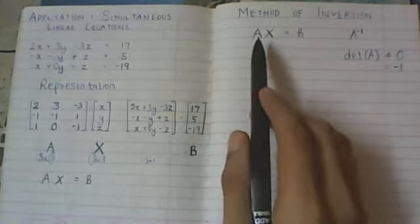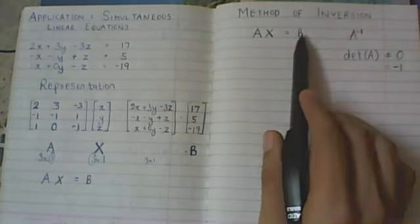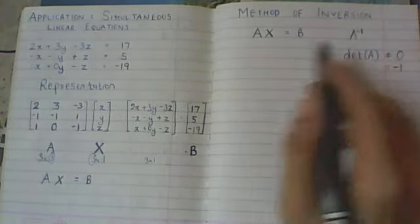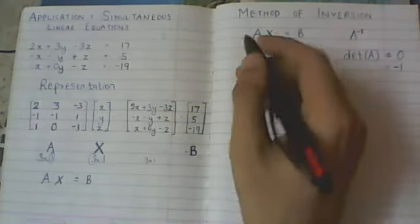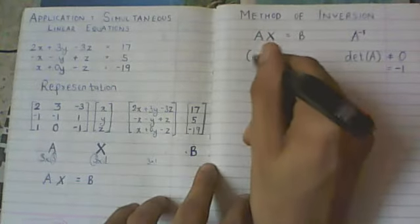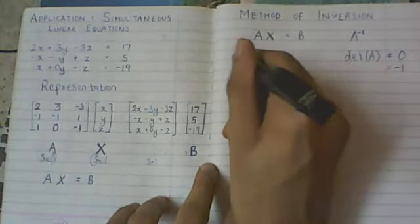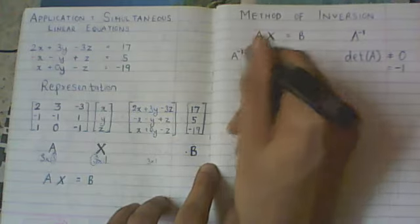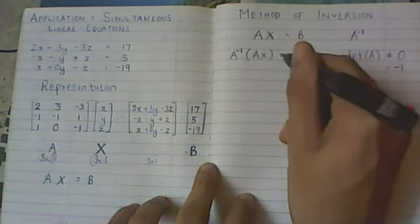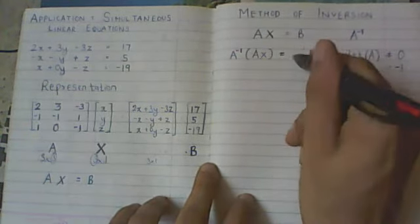What we can do is we can multiply both of these sides from the left with A inverse. So what happens is I multiply this AX with A inverse on the left hand side. And of course, if I am doing this on the left hand side, I have to do it on this side also.